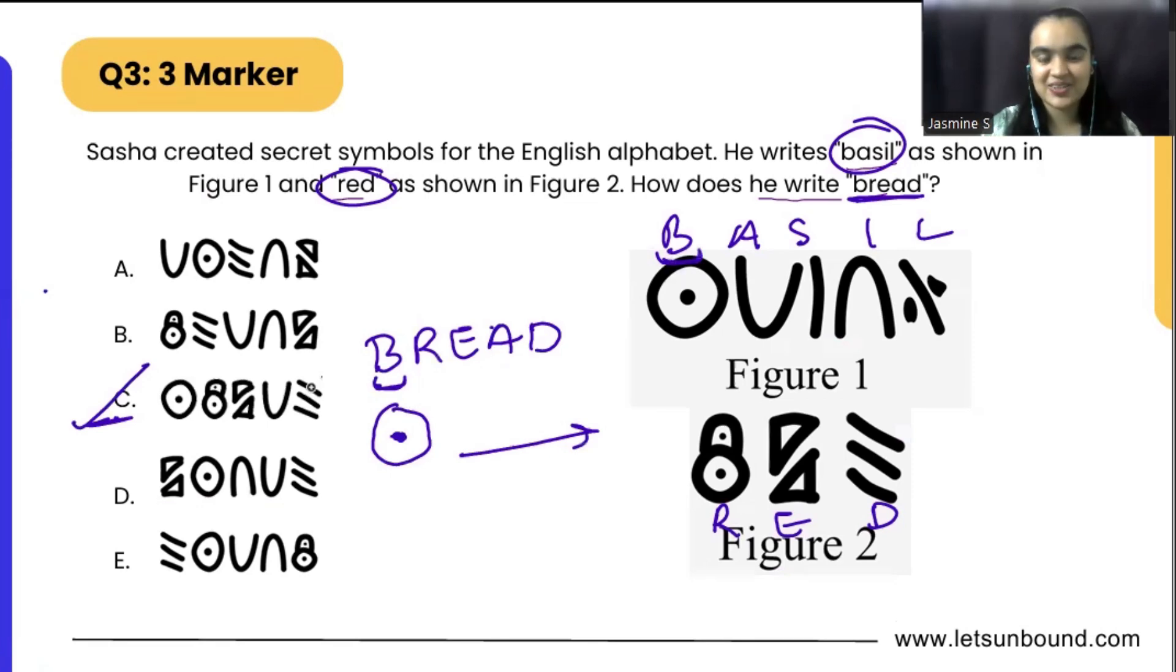But yes, now we are going to check whether we are actually correct or not. So after B, we are having R.